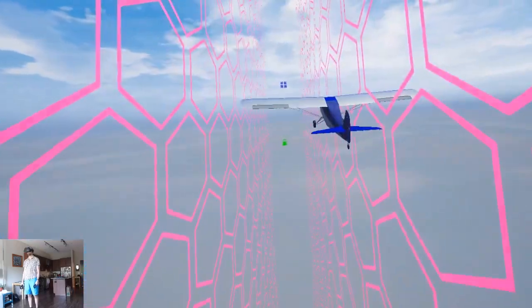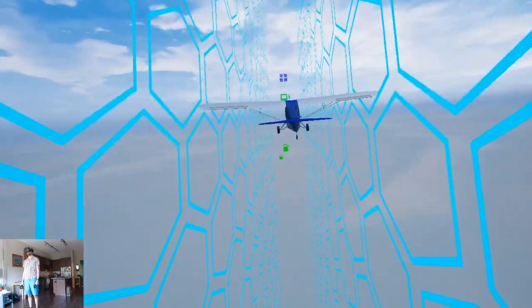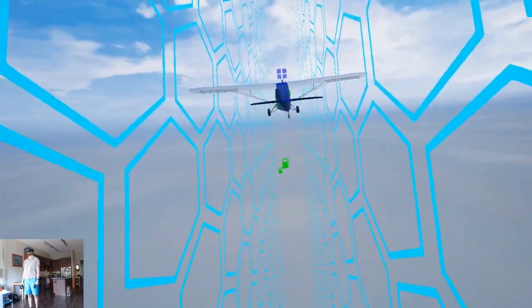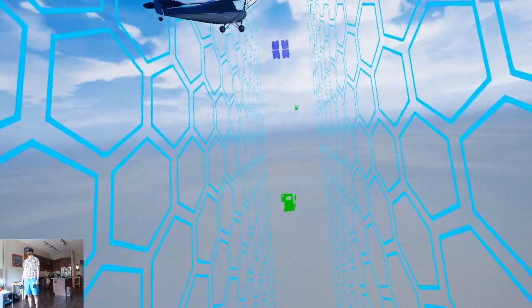The two barriers on the sides will instantly kill you. The tutorial states that changing your altitude will push the barriers away, but the barrier size just felt random to me.